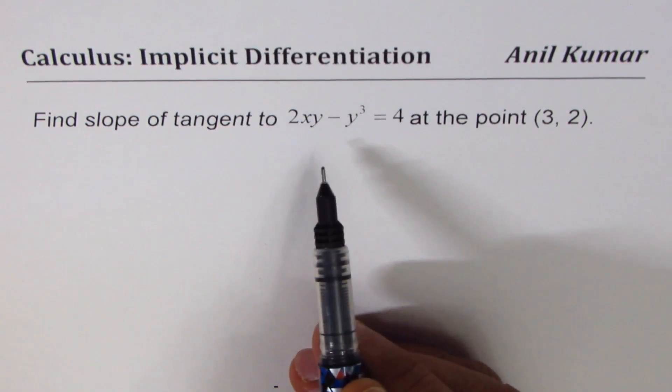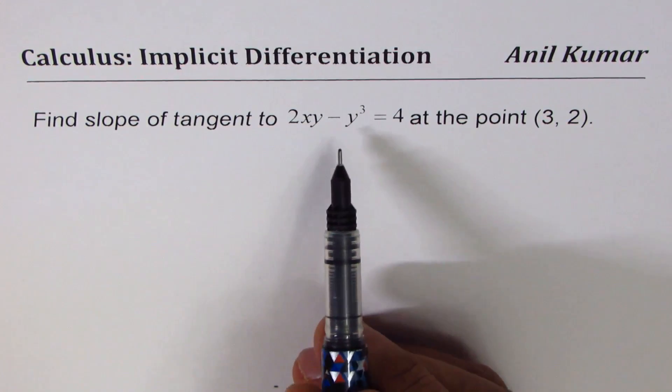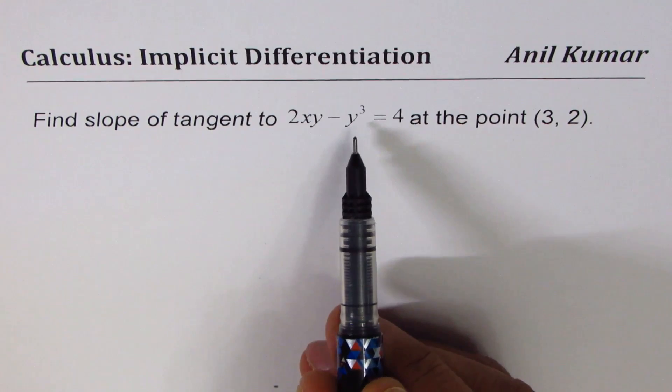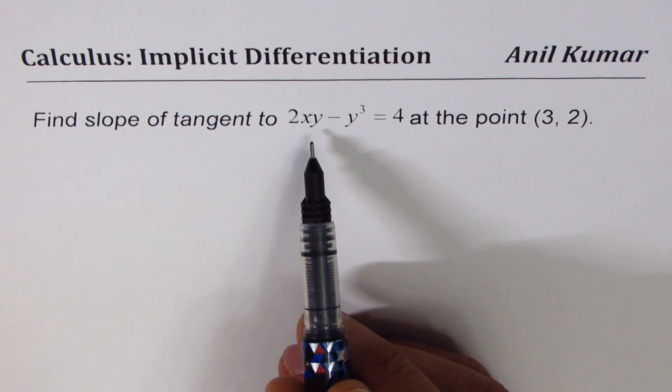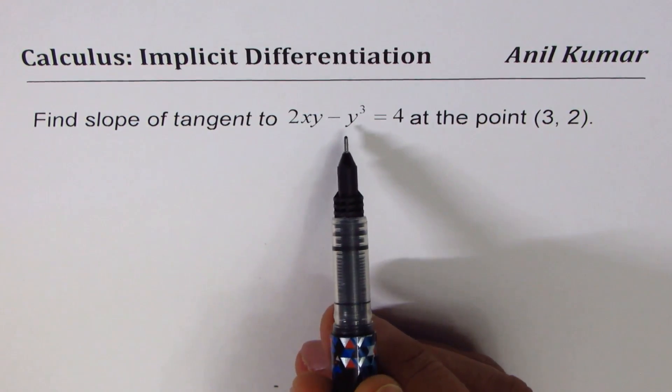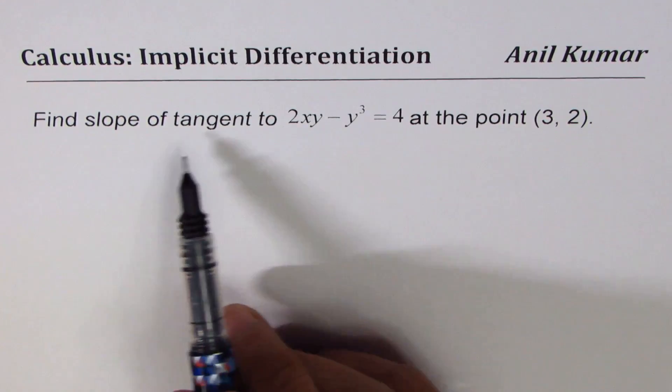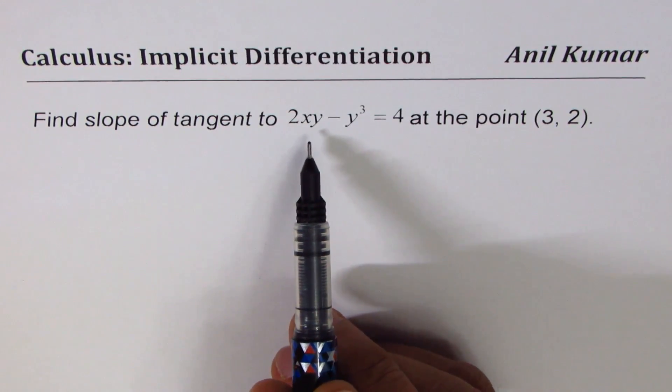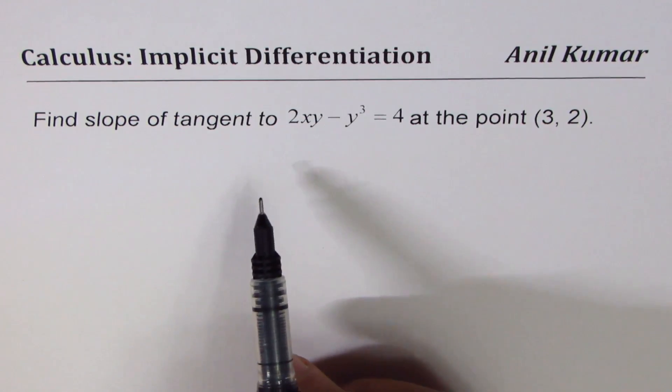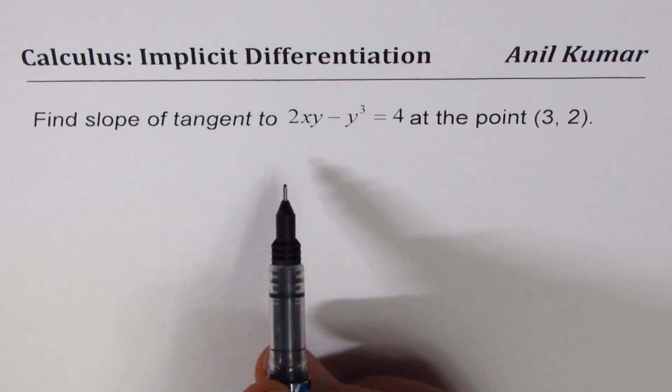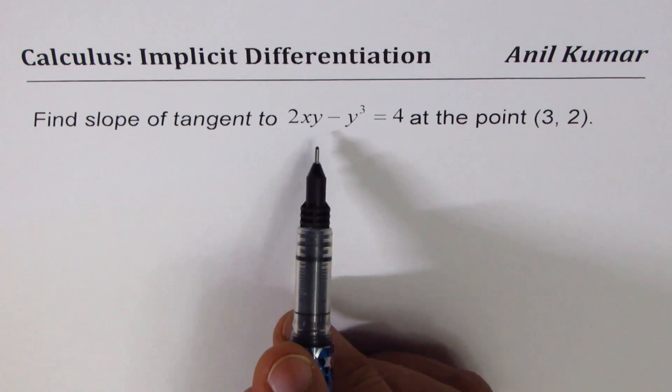For this function, it is actually difficult to isolate y and explicitly write an equation of y in terms of x. To find the slope we need to find the derivative, dy/dx. We can do implicit differentiation to find dy/dx.